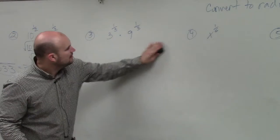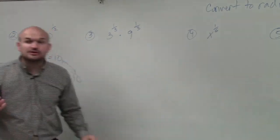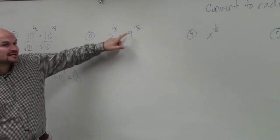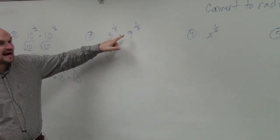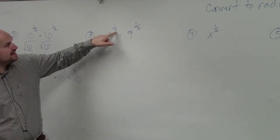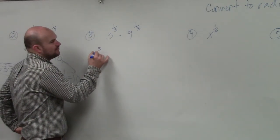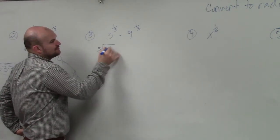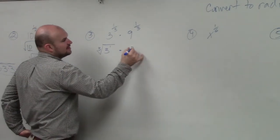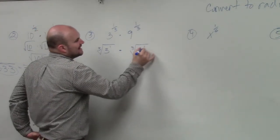So there's a couple of things I could do. I could either rewrite these as the same base, or I can simply rewrite them. Now, I know that I can rewrite them in their radical form. So that's the cube root of 3 to the 1st power times the cube root of 9 to the 1st power.